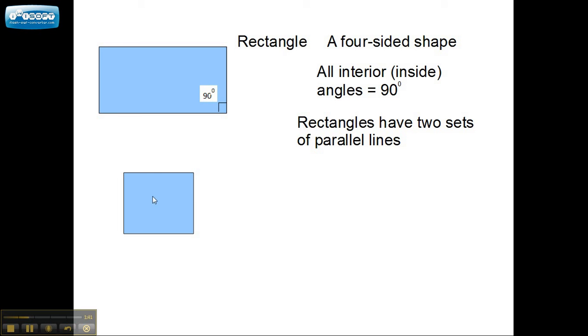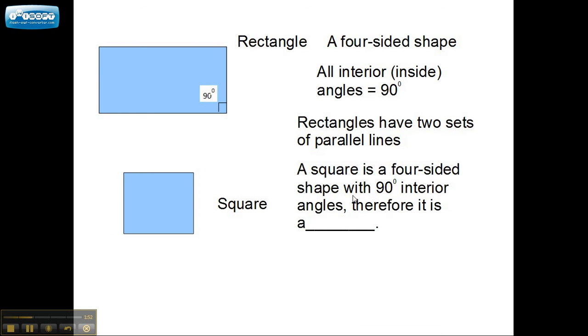Now, look at this shape down here. As you can see, it's very similar to our rectangle, but it's not exactly like it. It's a square. However, let's take a look at the properties of a square. It's a four-sided shape, like a rectangle. 90 degree interior angles, like a rectangle. So a square is a rectangle. That's right. Squares are rectangles.